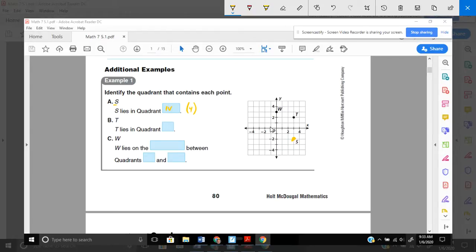T lies in the memory letter C, one, two, three, four. It's in the first quadrant, quadrant one. And letter C, we're looking at W, this point right here. Well, W lies on the, what line is it on? It's on this Y axis. So it's actually between two quadrants. It's between quadrant one and quadrant two. It's actually on an axis. Let's move on to example number two.